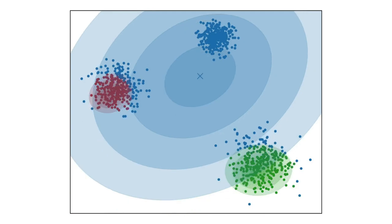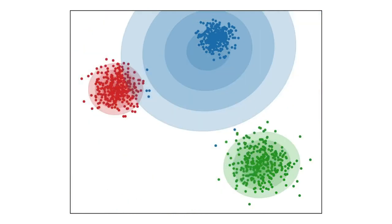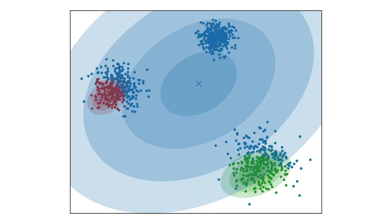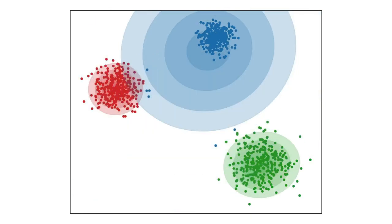So, in order to have a much more representative distribution for it, you need to fit a Gaussian on top of each cluster which is basically what GMM tries to achieve.